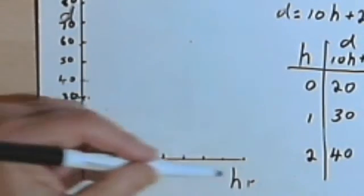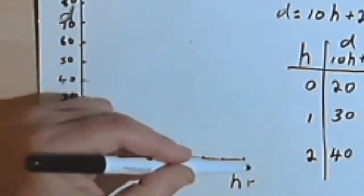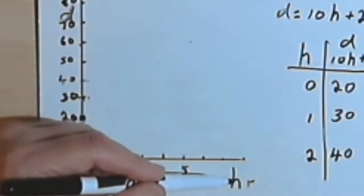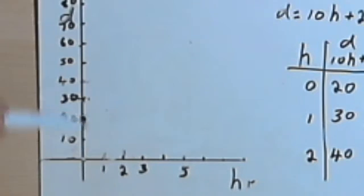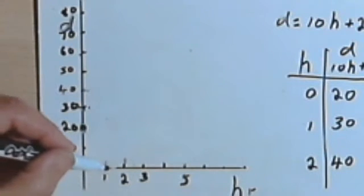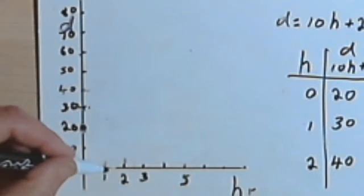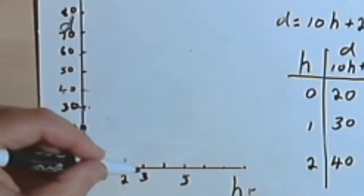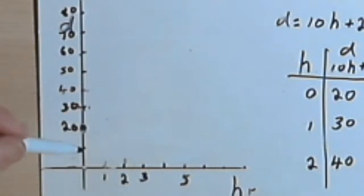So on this graph, the horizontal axis is going to be the number of hours, and the vertical axis is going to be the number of dollars. The tick marks I've used for the horizontal axis show me one hour. So this is 1, 2, 3, 4, 5, 6, and so on. The tick marks on the vertical axis are in $10 increments. I didn't want to use $1 because I haven't got enough paper to go all the way up. So this is 10, 20, 30, 40, 50, and so on. Let's put the numbers in.